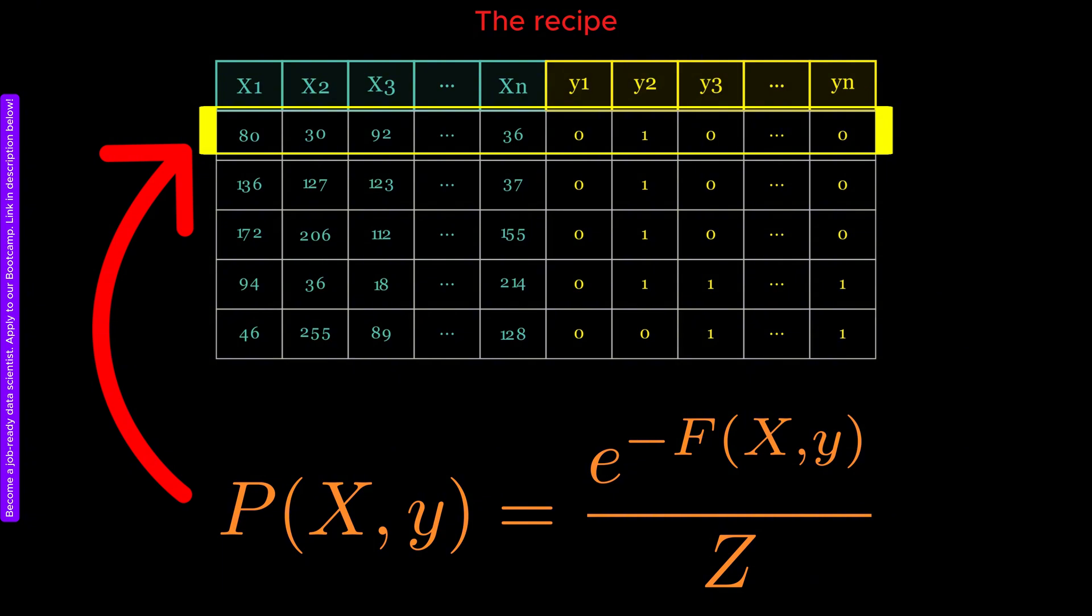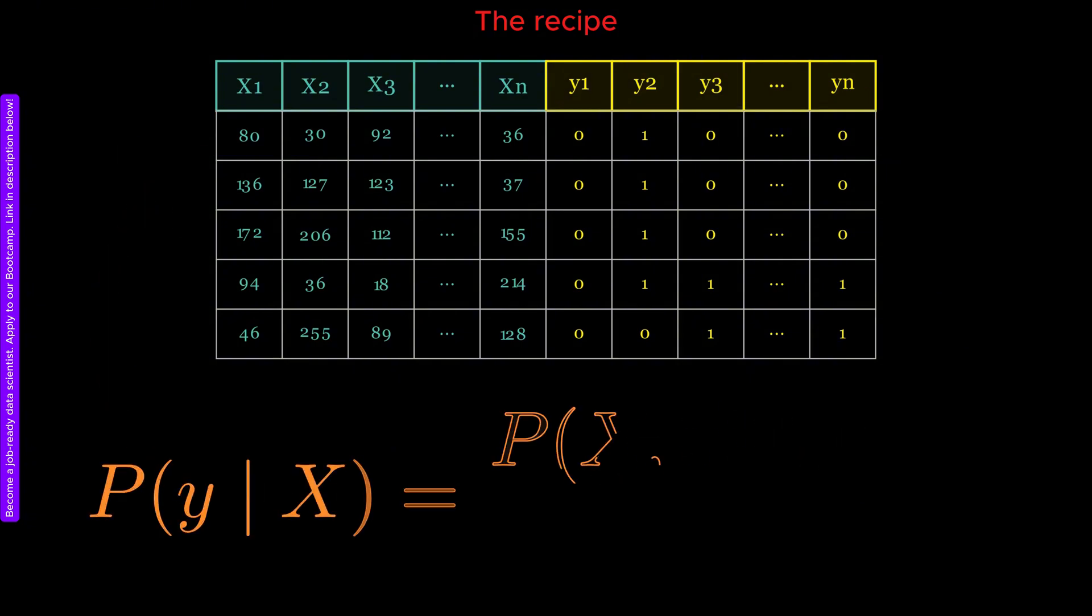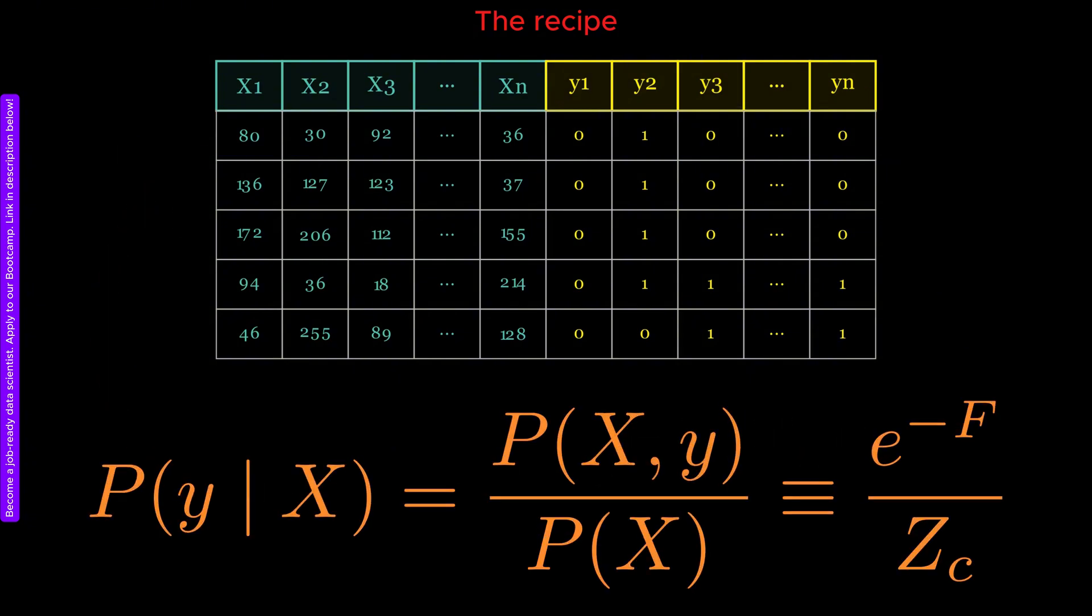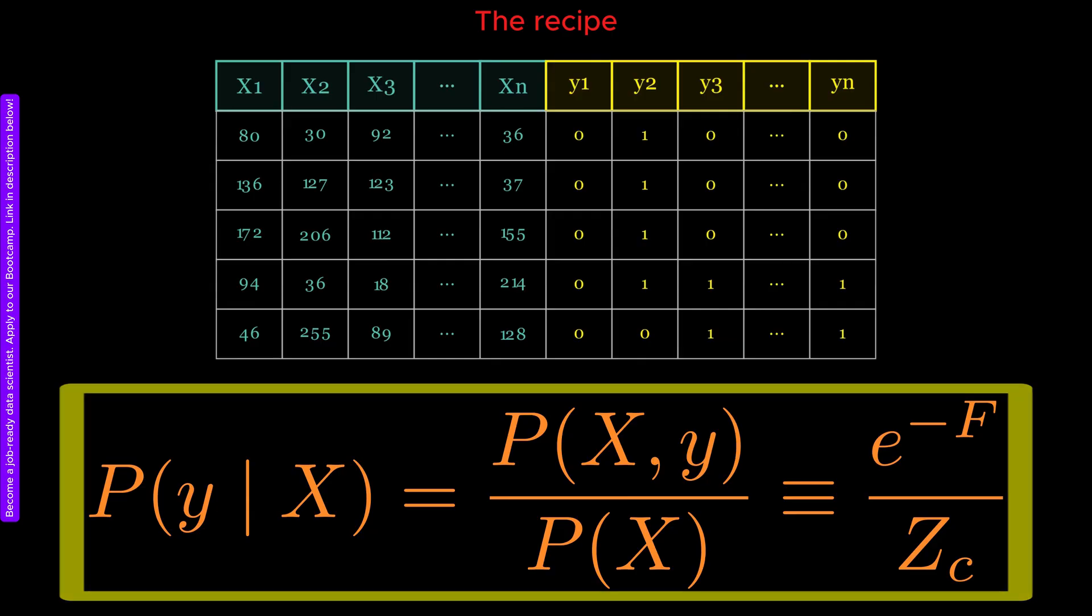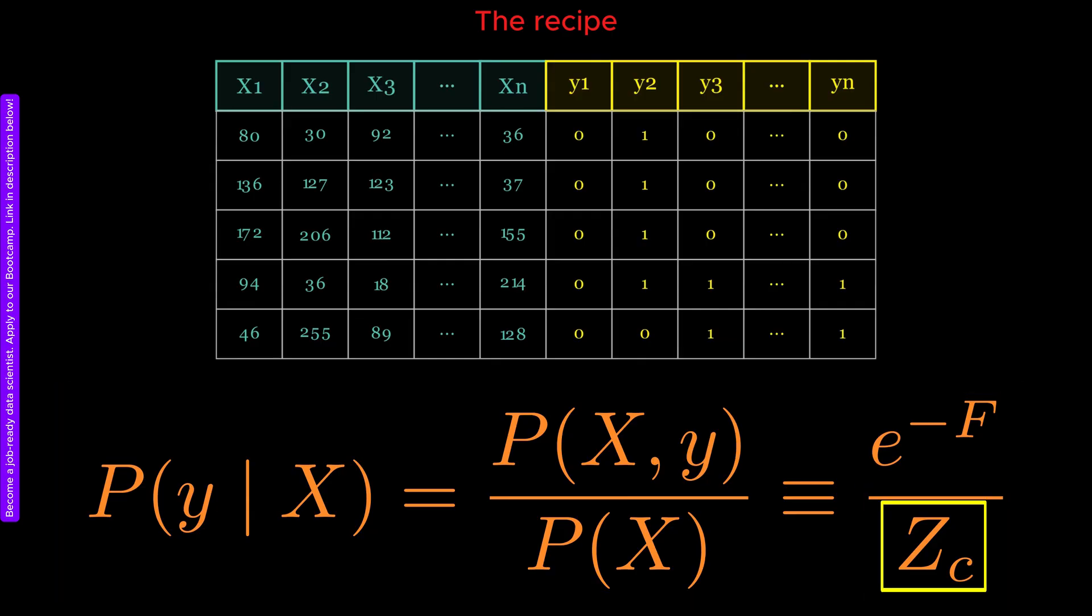What we are really interested in, however, is the probability of the output neurons given an input image. In other words, we want the conditional probability expressed as follows. Here, Z sub C is another normalization constant, but the free energy F is the same as before.